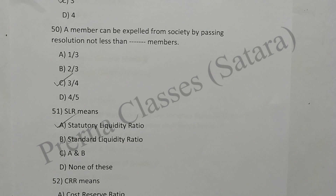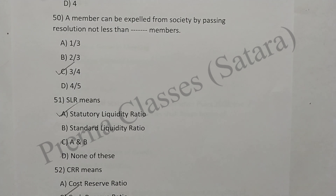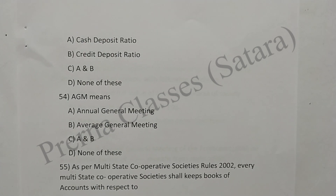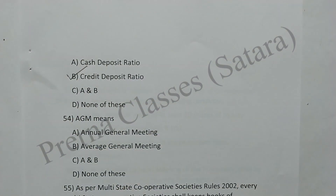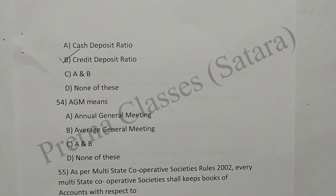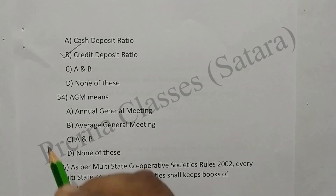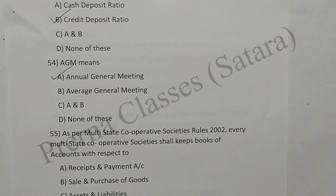Question 51: SLR means Statutory Liquidity Ratio. Option A is correct. Question 52: CRR means Cash Reserve Ratio. Option B is correct. Question 53: CD means Credit Deposit ratio. Question 54: AGM means Annual General Meeting. Option A is correct.